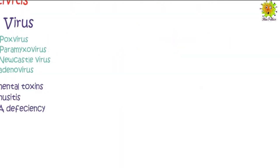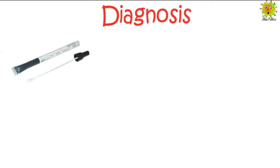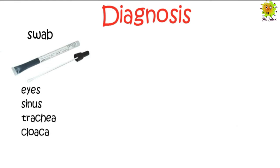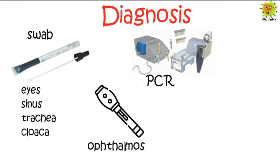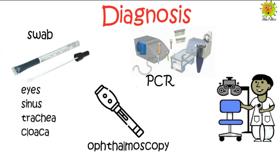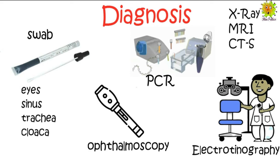For diagnosis, swab samples are collected from the eyes, sinus, trachea, and cloaca, and staining procedures are performed to detect the causative agent. A PCR test is also used to detect the infectious agent. Ophthalmoscopy is also done to determine any injury. Electroretinography is used to determine the function of the retina. Additionally, X-rays, MRI, and CT scan can also be performed to determine the reason behind the infection or disorder.